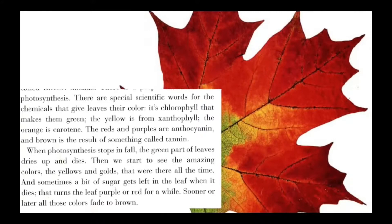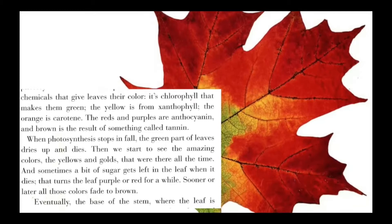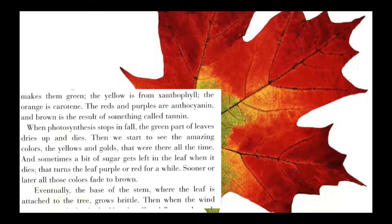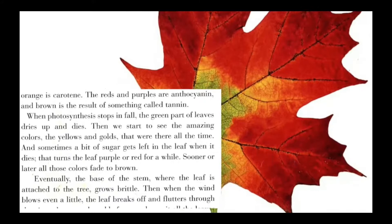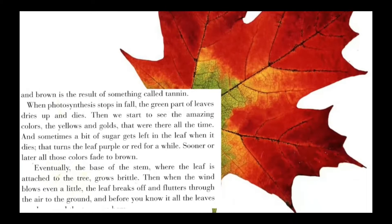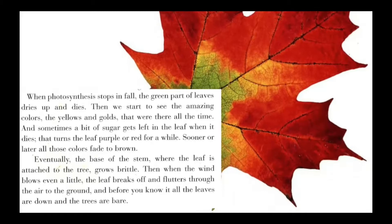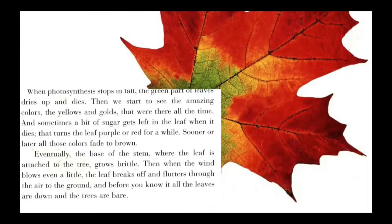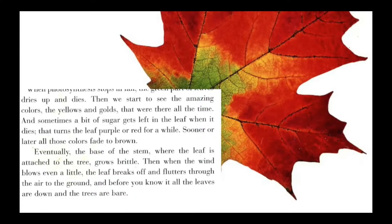When photosynthesis stops in fall, the green parts of leaves dry up and die. Then we start to see the amazing colors — the yellows and golds that were there all the time. Sometimes a bit of sugar gets left in the leaf when it dies, turning the leaf purple or red for a while. Sooner or later all those colors fade to brown. Eventually the base of the stem grows brittle, and when the wind blows, even a little, the leaf breaks off and flutters to the ground, and before you know it all the leaves are down and the trees are bare.